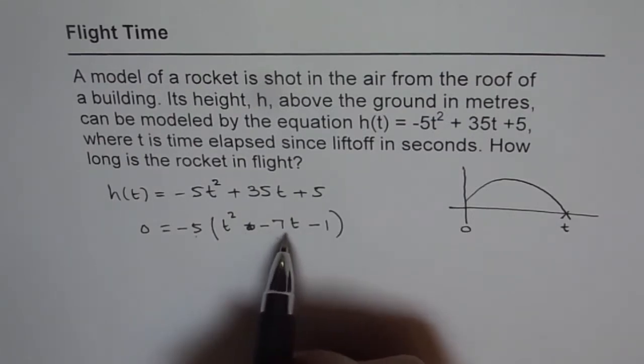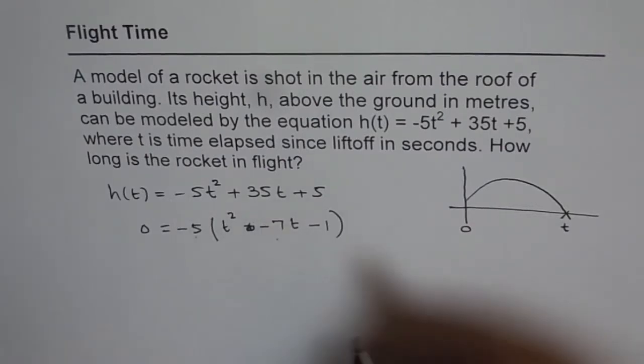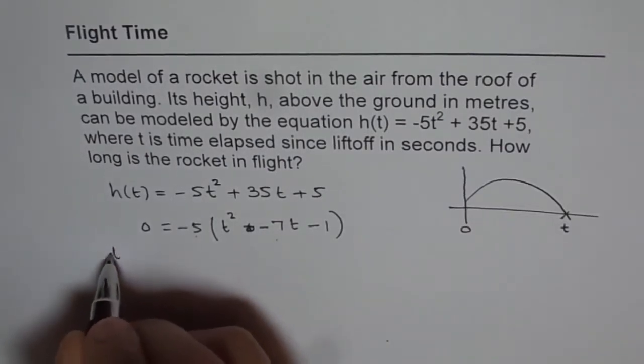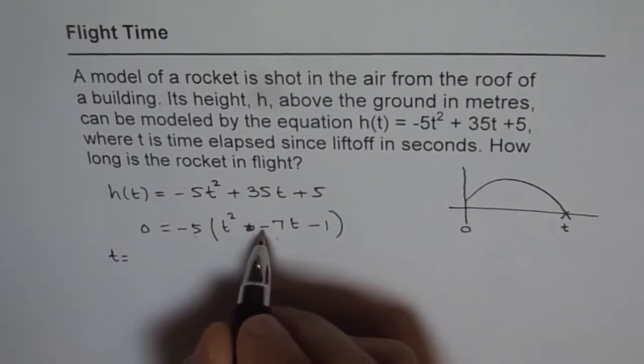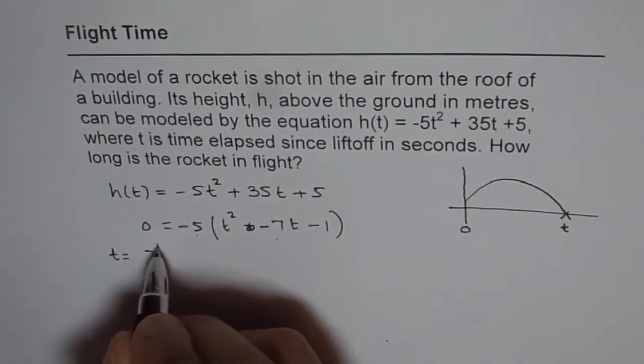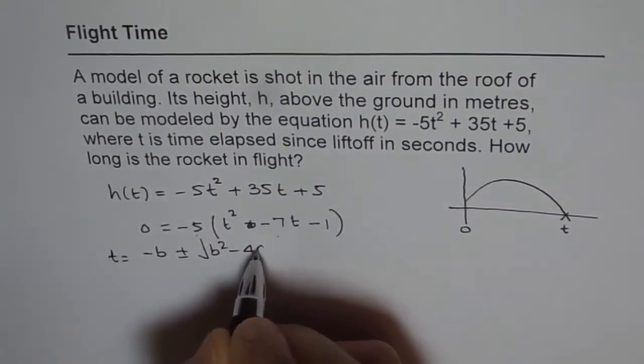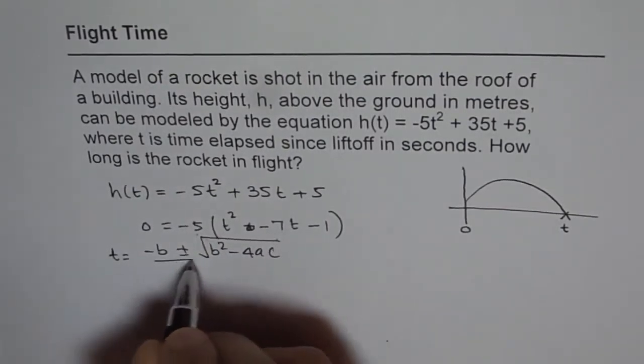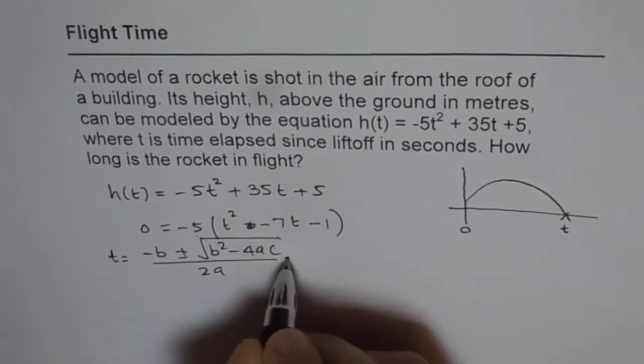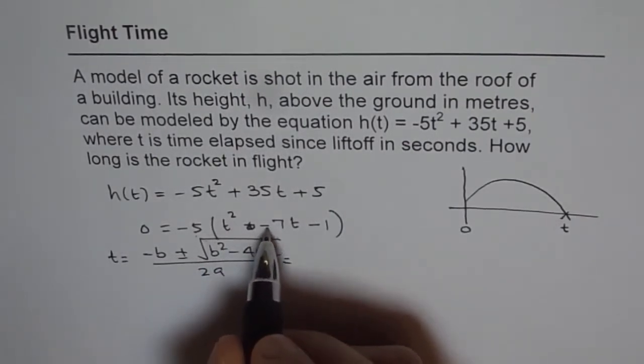So to find when will it be zero, we can use quadratic formula, right? So the quadratic formula is t = -b, let's write down the quadratic formula first: -b ± √(b² - 4ac) over 2 times a. Now in this, b is -7.